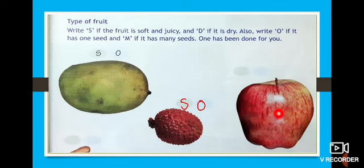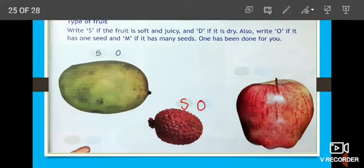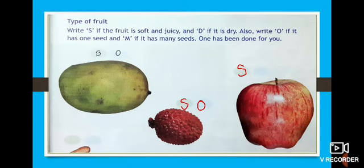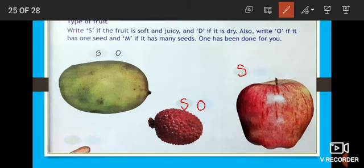And look at the next one. What picture is this, children? Apple. You all love to eat this. Apple is a soft and juicy fruit, so we have to write S in the circle. And it has many seeds — more than 5 or 6 seeds — so we have to write M for many seeds.